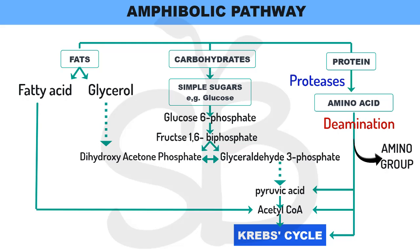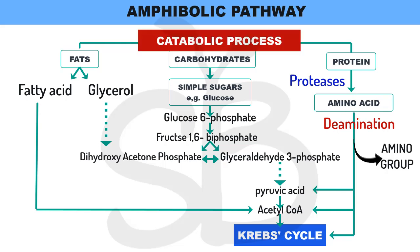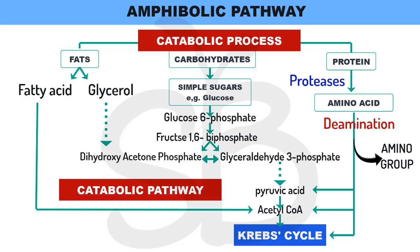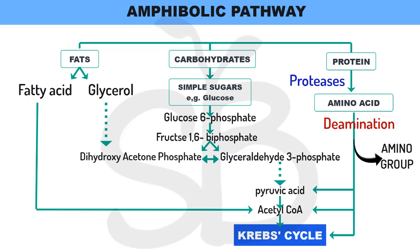The respiratory process involves breaking down the substrate — this is traditionally the catabolic process. This respiratory pathway is a catabolic pathway. Various compounds — fats, carbohydrates, and proteins — are broken down for ATP production.